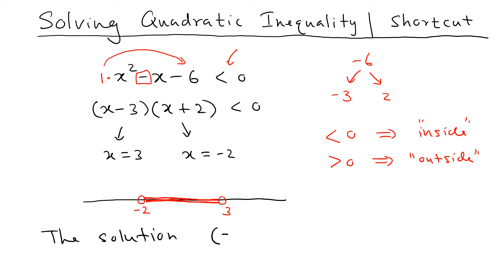The solution is from negative 2 to 3. If you pick any value in between, one factor is negative and the other is positive, so the product is negative. Outside the interval, both factors have the same sign, so the product is positive. That's how we solve the inequality quickly.